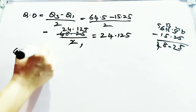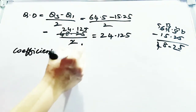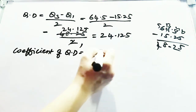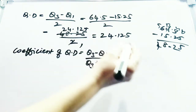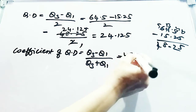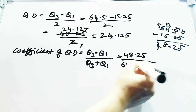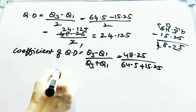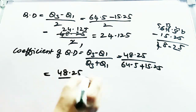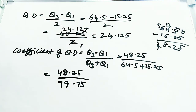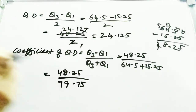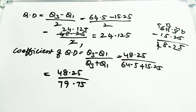If you are finding the coefficient of QD, the formula is Q3 minus Q1 by Q3 plus Q1. Q3 minus Q1 is 48.25 and Q3 plus Q1 is 64.5 plus 15.25 = 79.75. So the coefficient of QD is 48.25 by 79.75. Use your calculator to get the decimal value. If you have any questions, just drop a comment in the comment box.